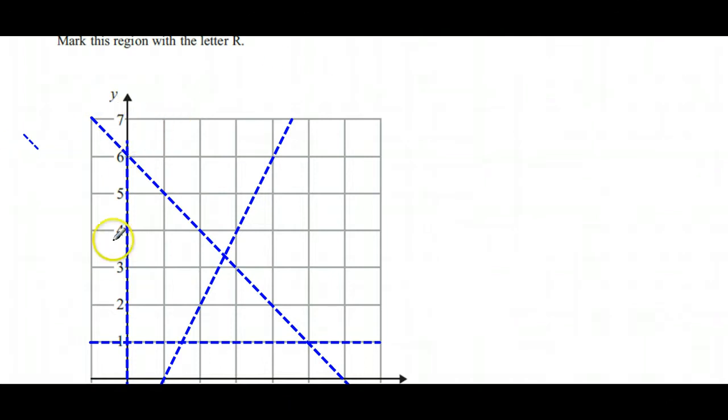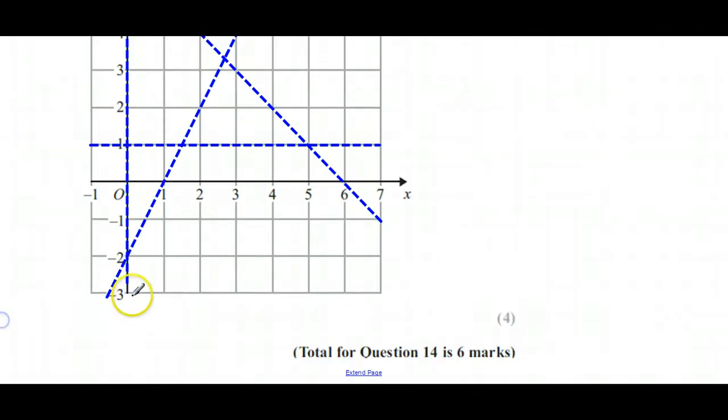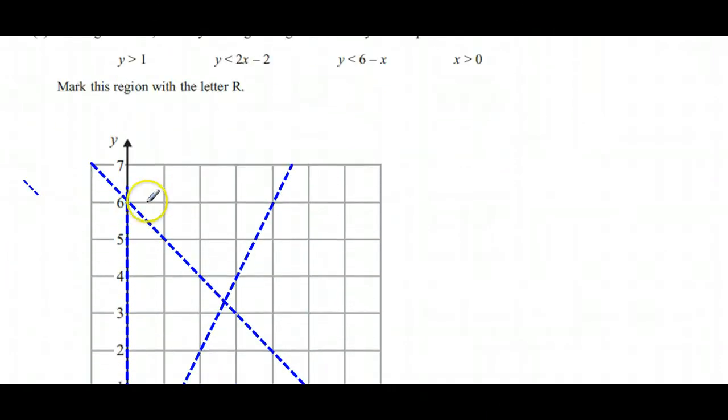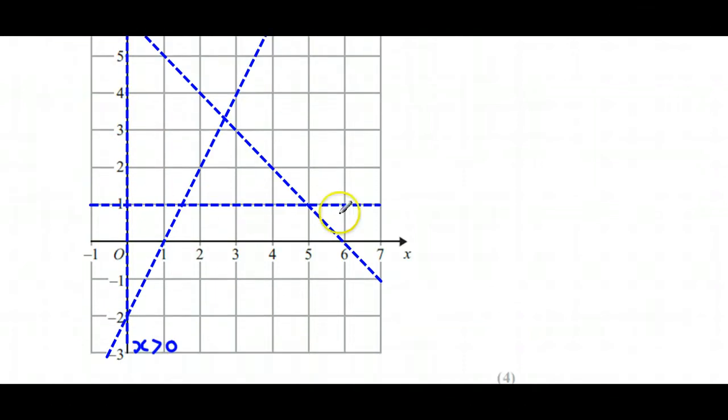So those are our lines. It seems fair to label them. We've got this vertical one which is x > 0, this one here where y < 6 - x, this one here was 2x - 2, and then we've got the horizontal line where y > 1.